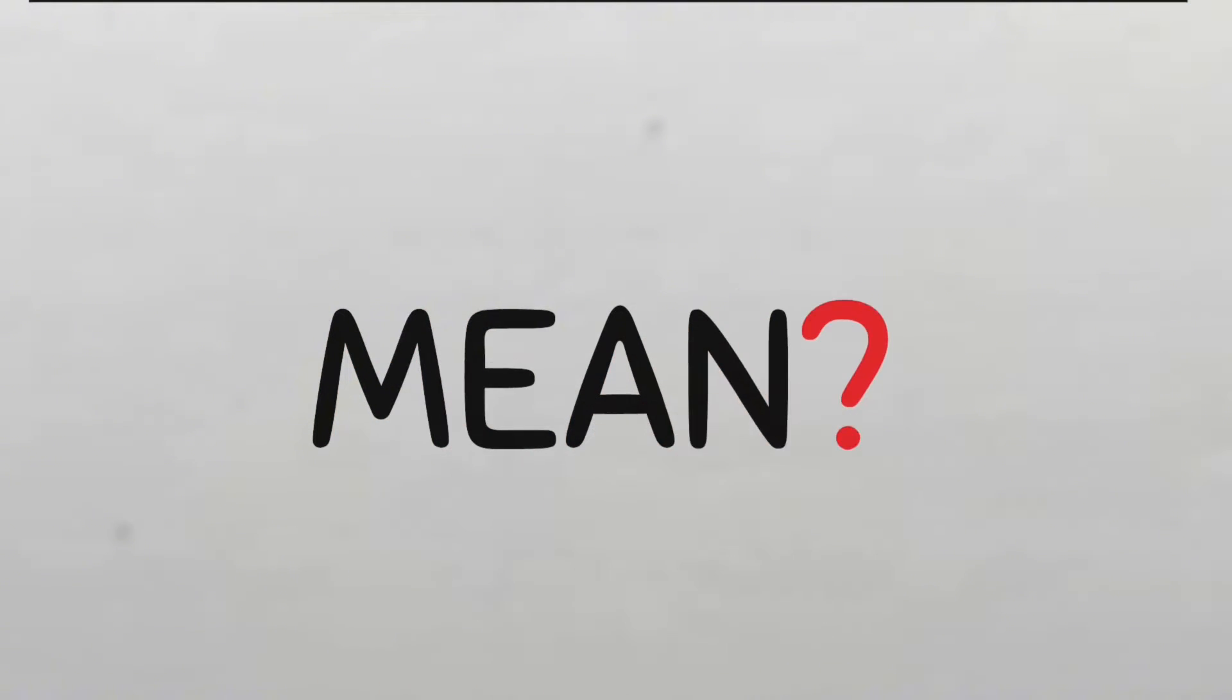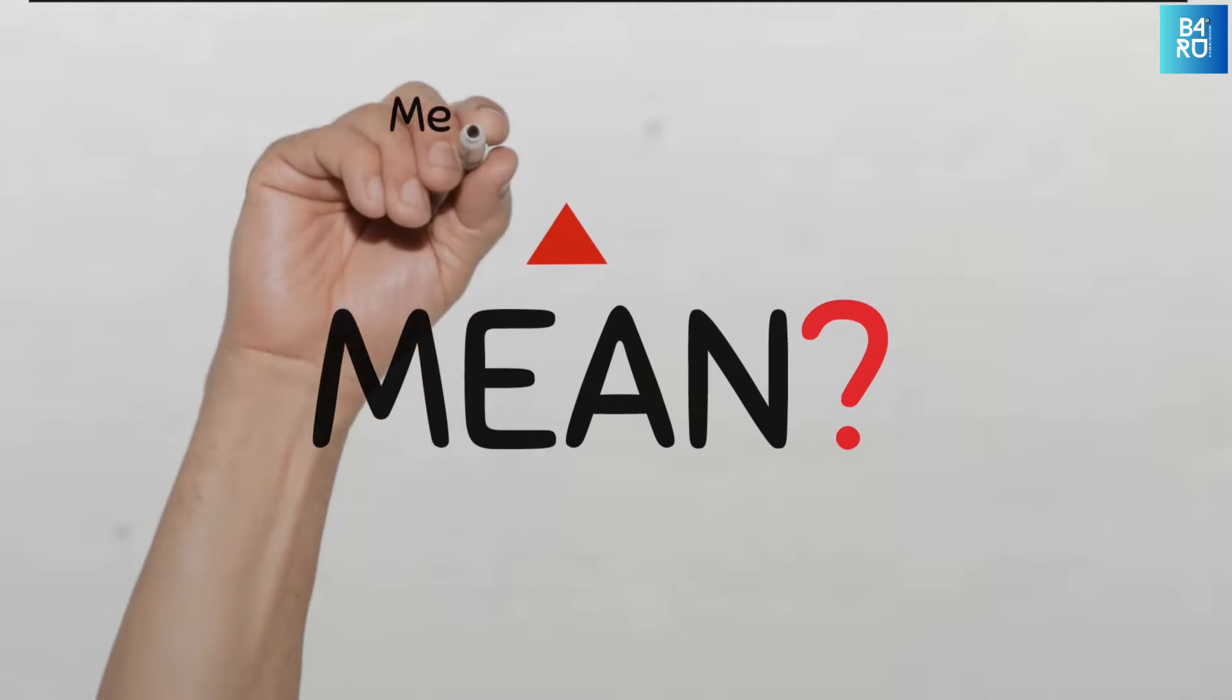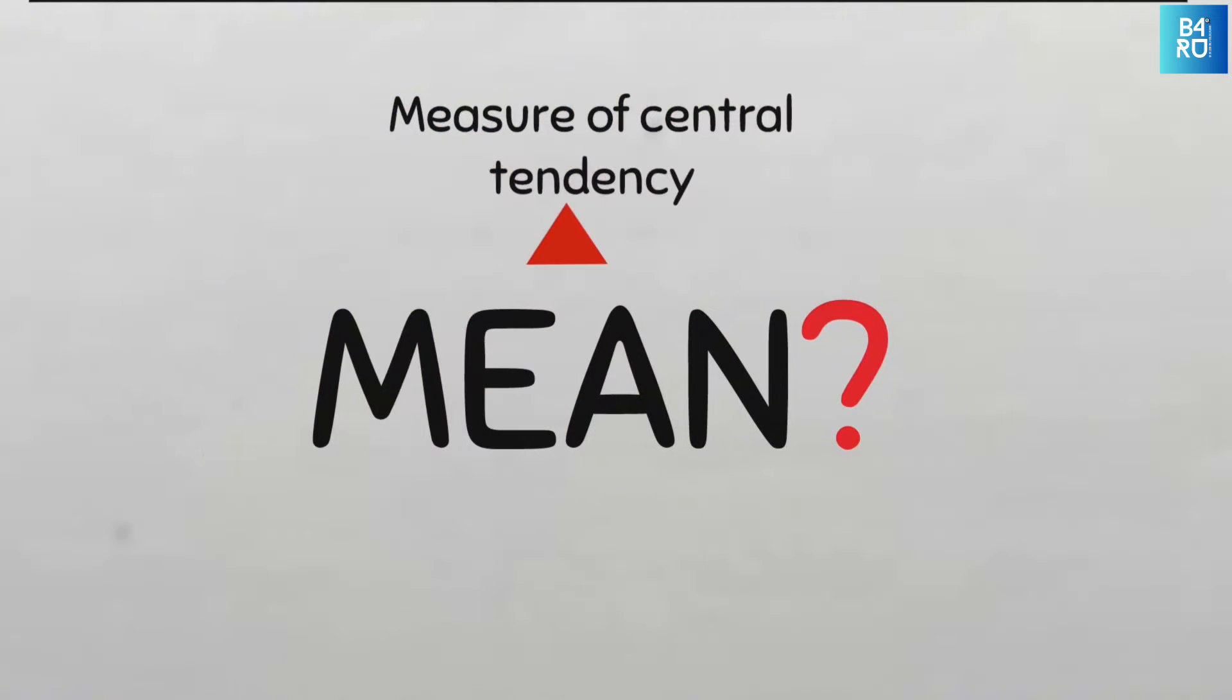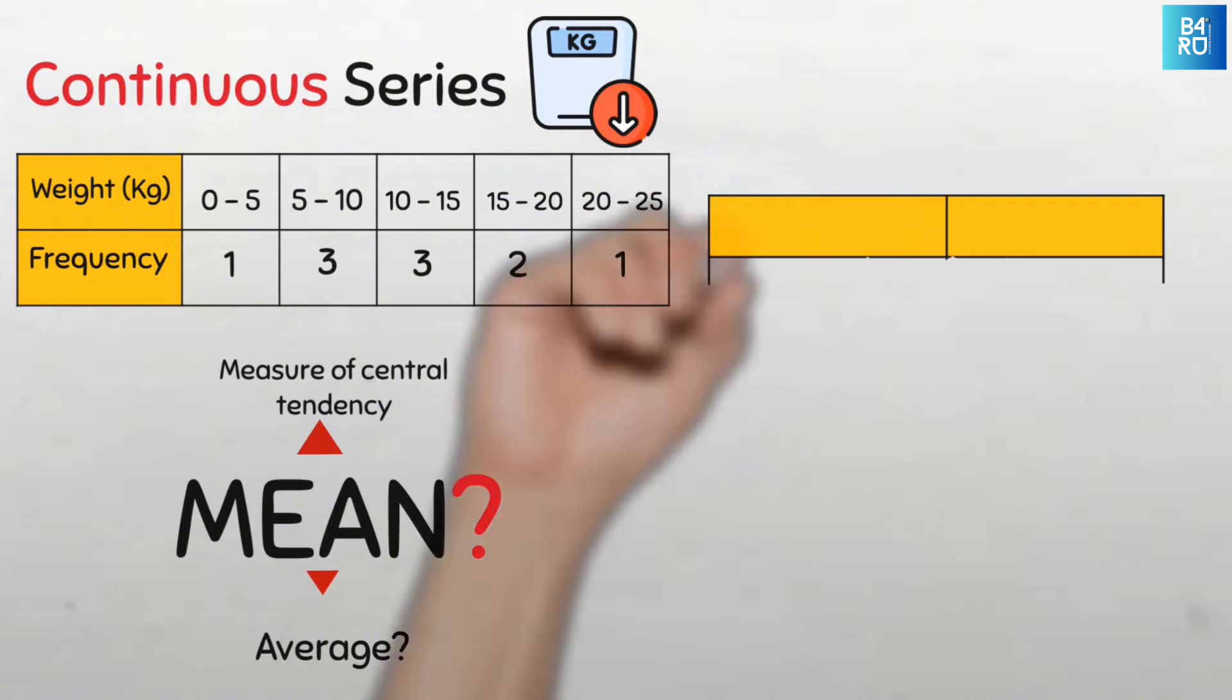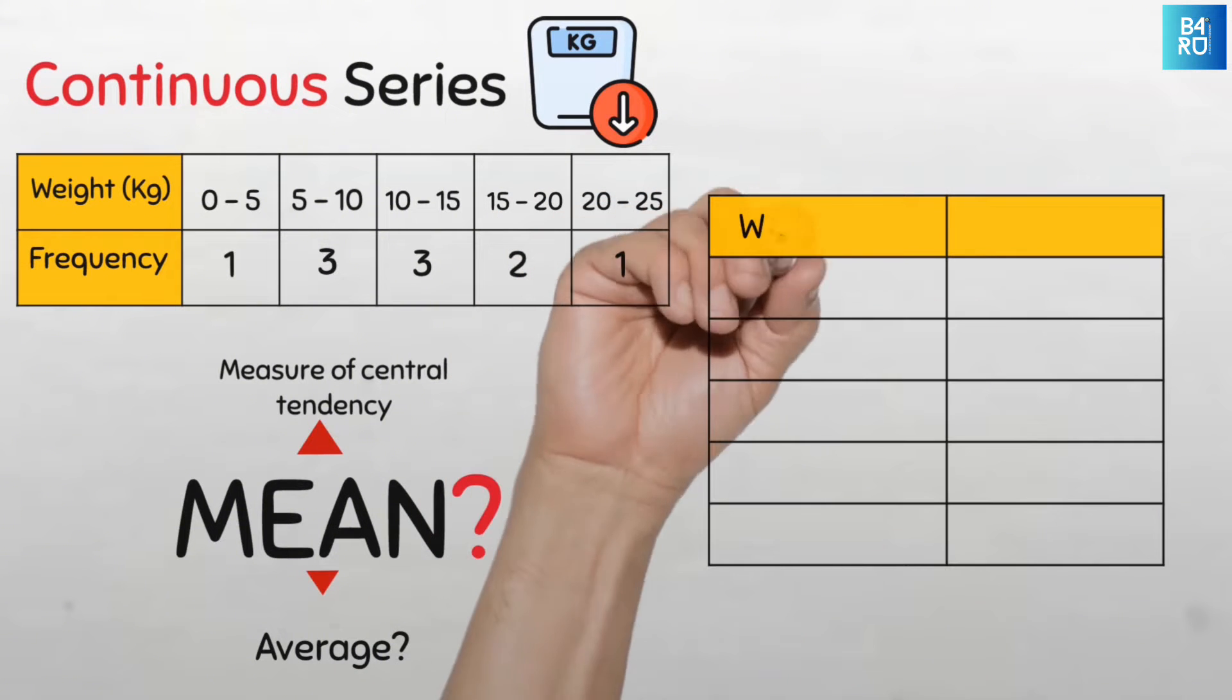So how do we find the mean of this type of data series? Recall that the mean is a measure of central tendency that indicates the average value of the data set. So we'll be looking for the average value. Let us modify the table a bit to make it easy for us to compute the mean.